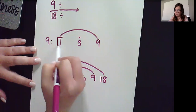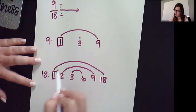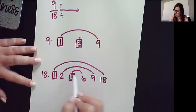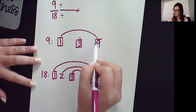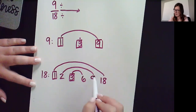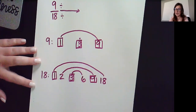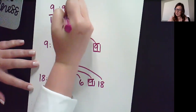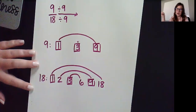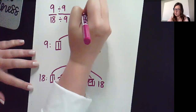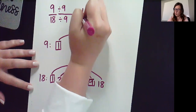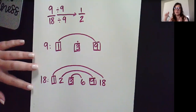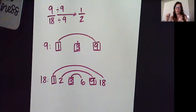They both have 1, they both have 3, they both have 9. So the biggest we have here would be 9. We divide top and bottom by our greatest common factor of 9. We get 1 half. So 9/18 in simplest form is 1 half.